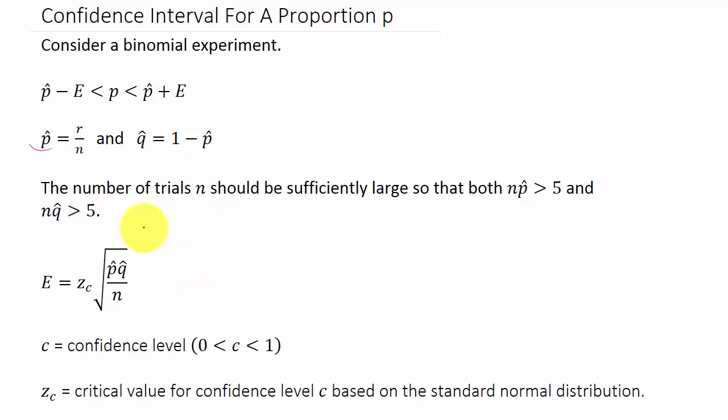The first thing we have to make sure is that the number of trials N is large enough. To check that, N times P hat has to be greater than 5, and N times Q hat has to be greater than 5. Then we can calculate E, which is Z sub C times the square root of P hat times Q hat over N.